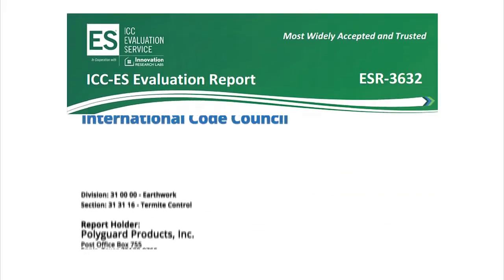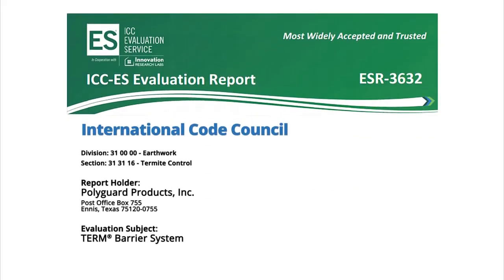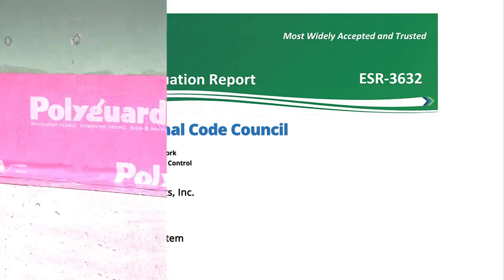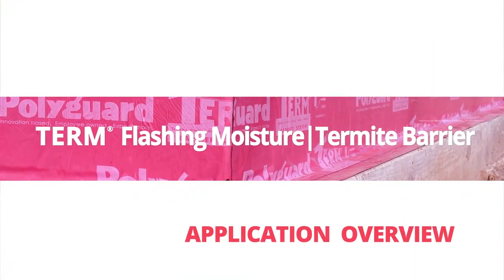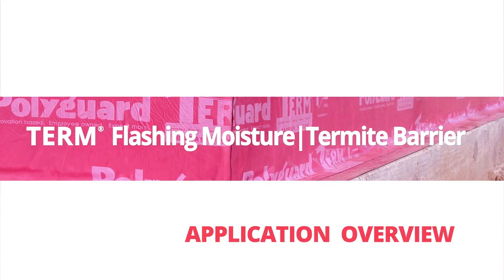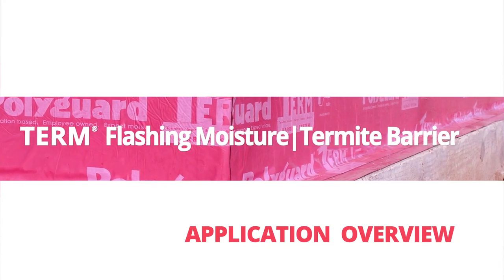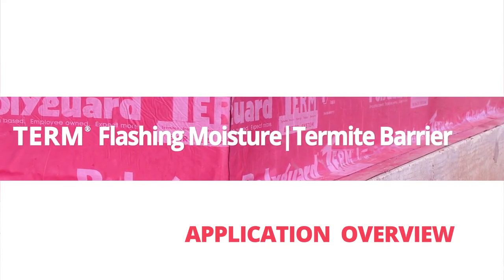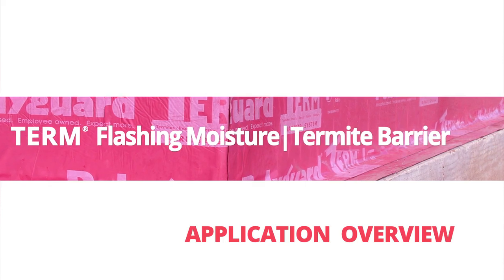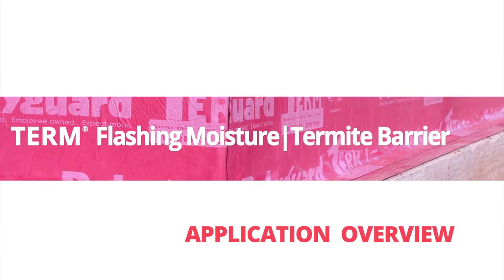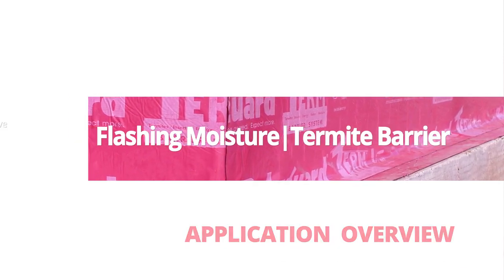The Term Barrier System has been evaluated as a physical termite barrier by the International Code Council. This video shows how to apply a Term Flashing moisture termite barrier on the perimeter of a structure. The Term Flashing barrier blocks water, energy leaks, termites, and other insects.